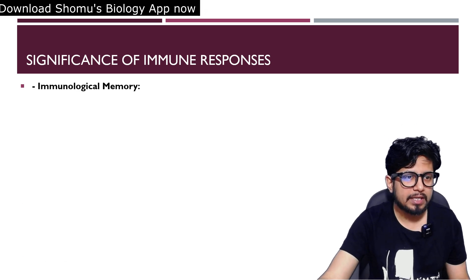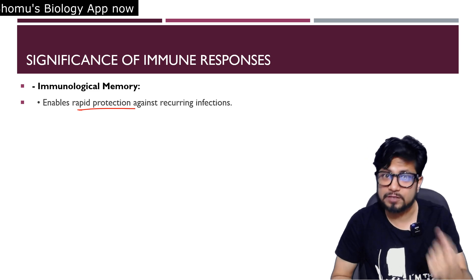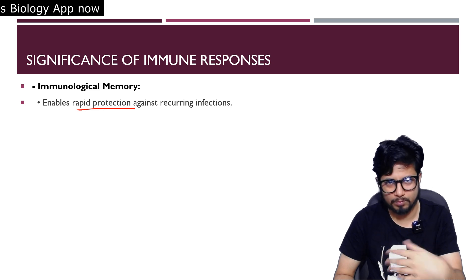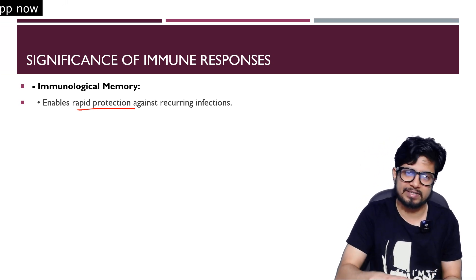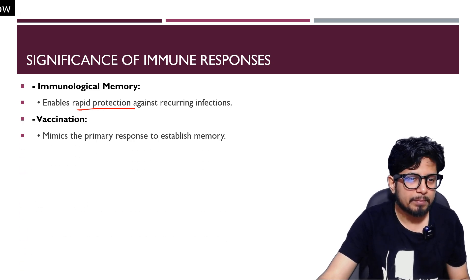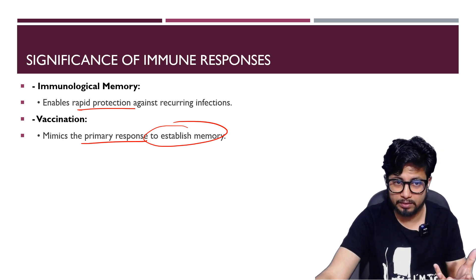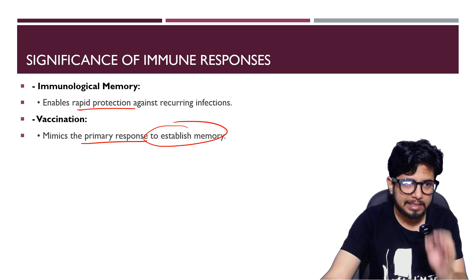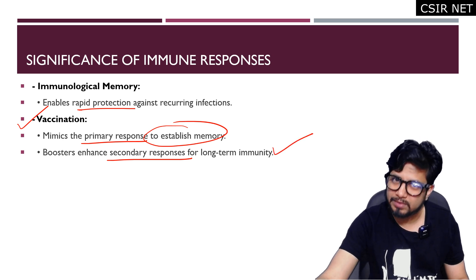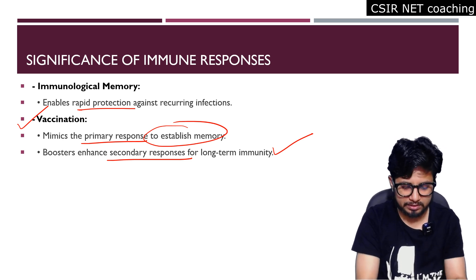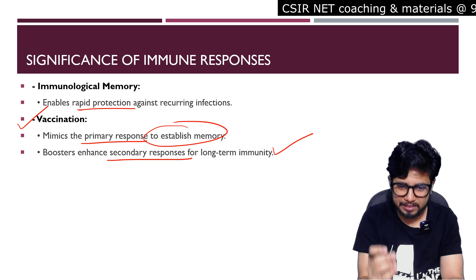The significance of immune responses: First, immunological memory enables rapid protection against recurring infections — our body's secondary immune response reacts very fast and protects us. Second, vaccination mimics the primary response to establish memory function so that if the body later encounters the antigen, the response can be faster. That is how we utilize the primary immune response mechanism to develop vaccines. Booster doses enhance the secondary response for long-term immunity.